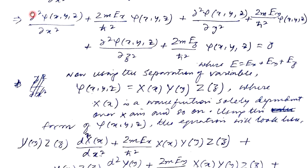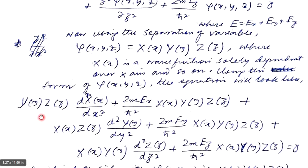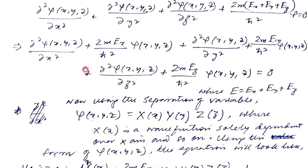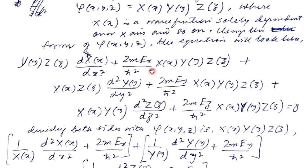When we substitute, Y and Z come outside as constants, and we get d²X/dx² plus (2m·Ex/h-cross²)·X, and similarly for the y and z terms with d²Y/dy² and d²Z/dz² respectively, each multiplied by their corresponding energy components.